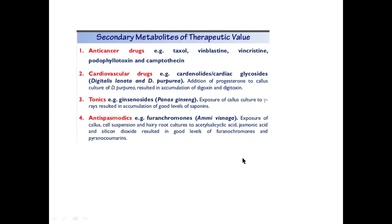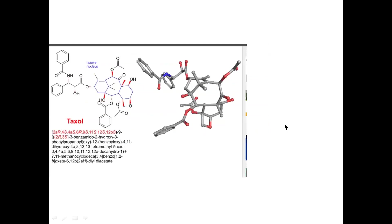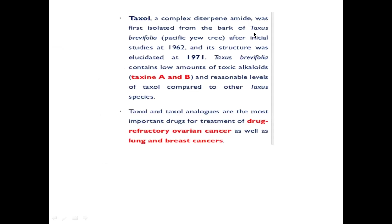When talking about pharmaceutically important secondary metabolites, alkaloids are very important — used as anti-cancer drugs, cardiovascular drugs, general health tonics, and anti-spasmodics. The most important anti-cancer alkaloid is Taxol, the most preferred alkaloid. This is the structure of Taxol, which is normally extracted from the bark of Taxus brevifolia, called the yew tree.